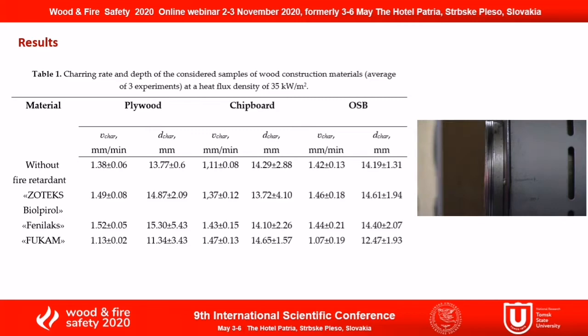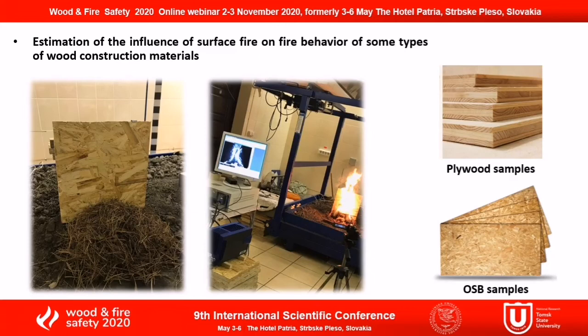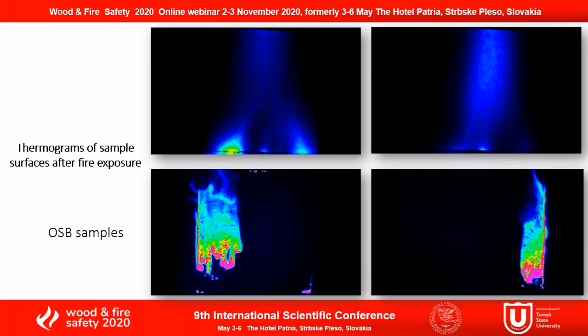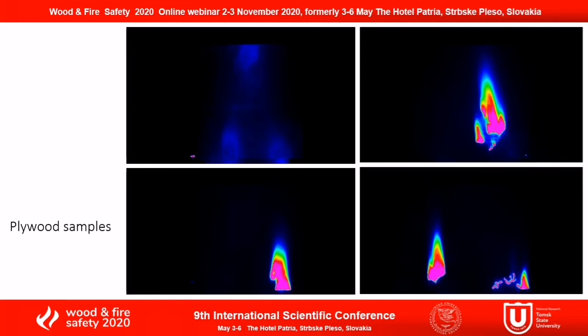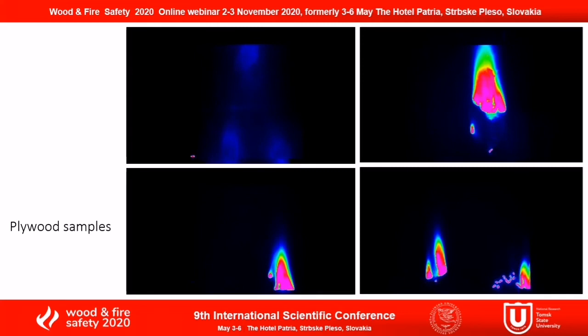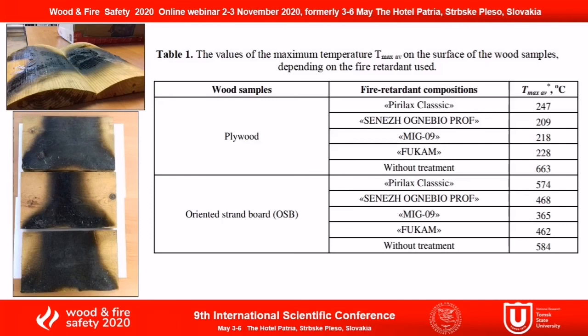We also measured the ignition time. The second part of my talk is about the estimation of the influence of surface fire on the fire behavior of some types of wood construction materials. Here you can see the video from our camera after the fire exposure. The use of the non-contact method allows us to obtain the distribution of temperature fields on the surface of the sample subjected to the combustion source. The geometric dimensions of the highest-heat areas were measured using tools available in the Altair software. The size of the sites was determined at the time when the burning layer of forest fuels completely burned out and the flame stopped screening the area under the structure. Comparative analysis shows that depending on the kind of wood, the best fire retardant characteristics are demonstrated by different compositions.